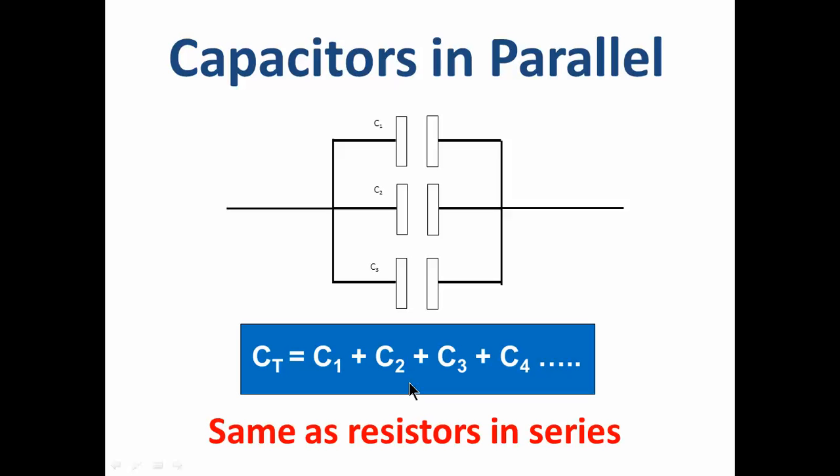You need to be able to calculate capacitors in parallel. So in parallel, they act like resistors in series, and we just add the values. This is because we're adding the plate size. If you look here, these capacitors' plates will add together there and there, and this capacitor, the overall capacitance, will be 3 times this capacitor, if these are the same value. So in parallel, just add them.